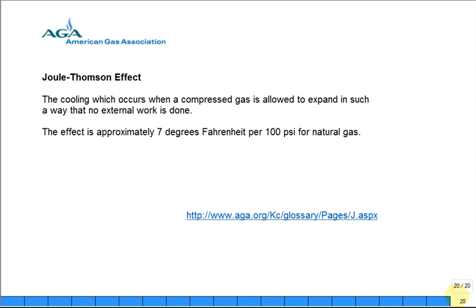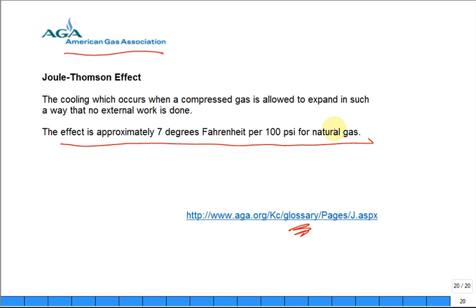Did I talk last time about the Joule-Thompson effect for natural gas? When we went to this glossary for the American Gas Association, we saw that they described that for a 100 PSI drop in natural gas, you get about seven degrees temperature change.